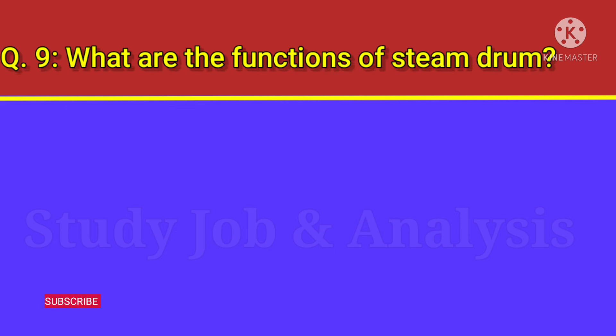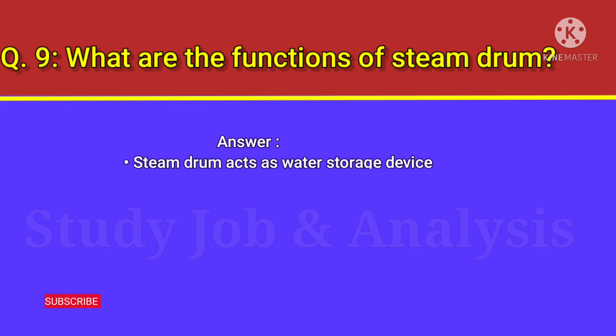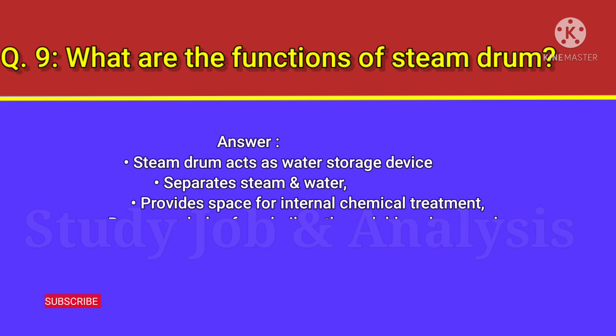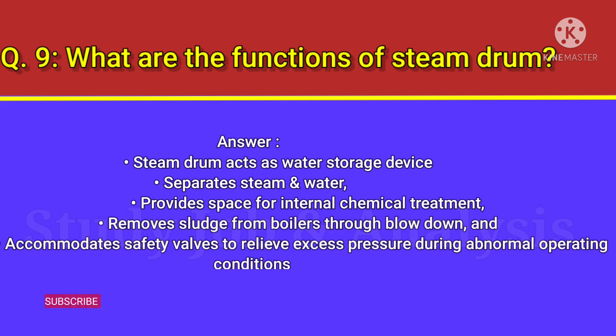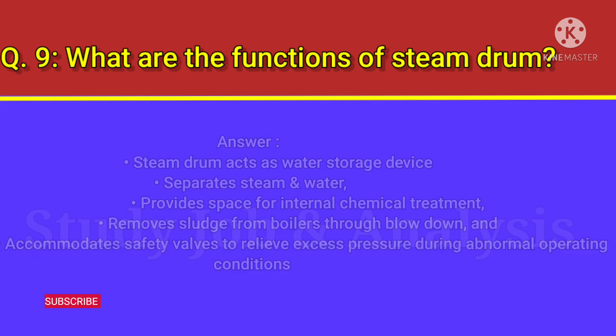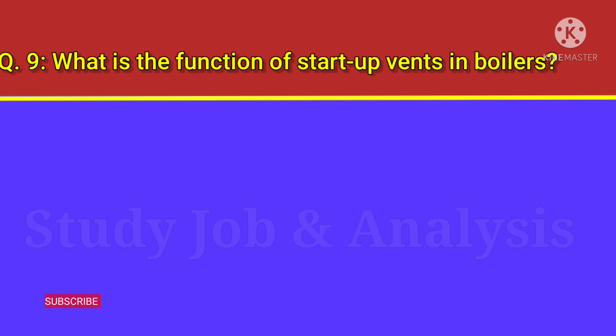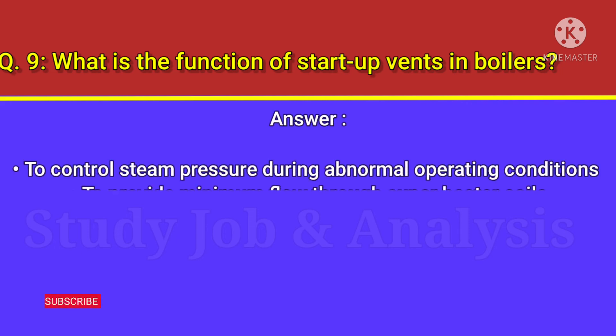Question number nine: what are the functions of the steam drum? Answer: The steam drum acts as a water storage device, separates steam and water, provides space for internal chemical treatment, removes sludge from boilers through blowdown, and accommodates safety valves to relieve excess pressure during abnormal operating conditions.